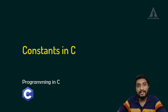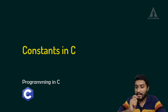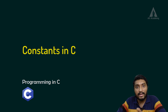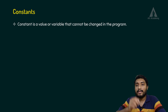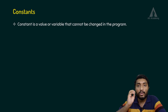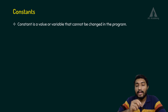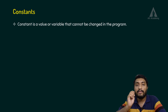Hi, in this lecture we are going to discuss about constants in C programming language. What do we call a constant? A constant is a value or a variable that we cannot change in our C program.